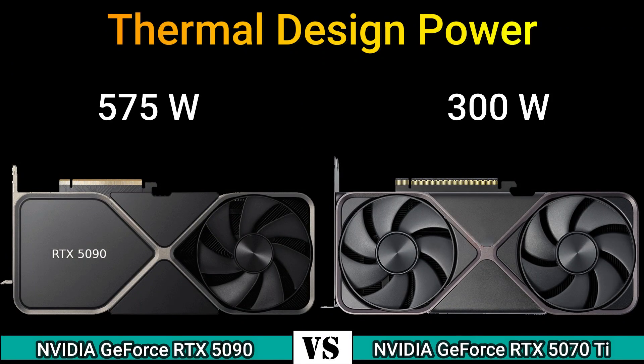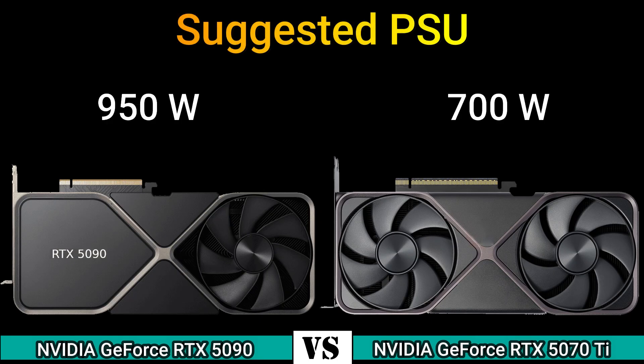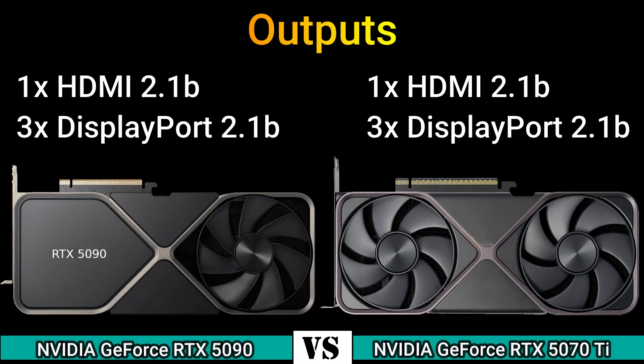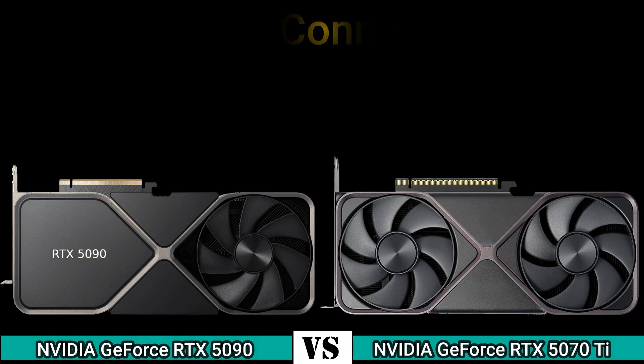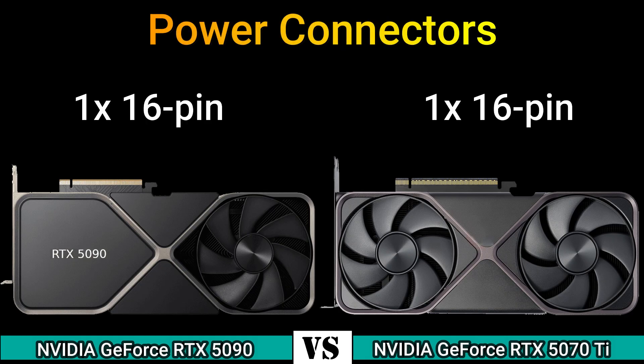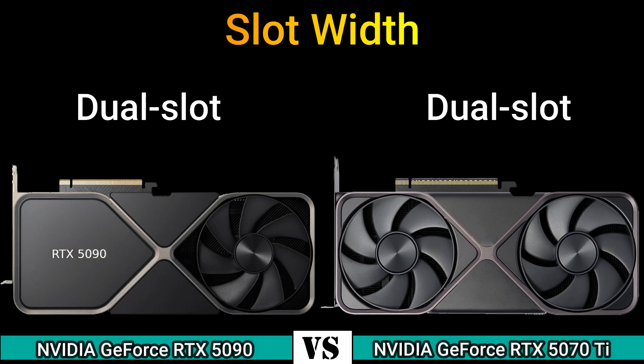Thermal design power: 575 watts and 300 watts. Suggested PSU: 950 watts and 700 watts. Output: 1x HDMI 2.1 and 3x DisplayPort 2.1. Power connector: 1x 16-pin. Slot: dual slot.